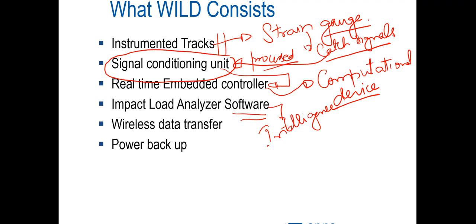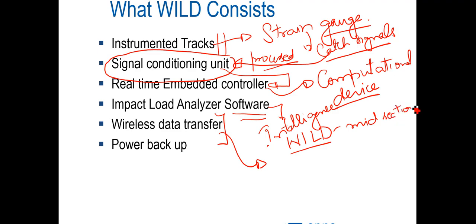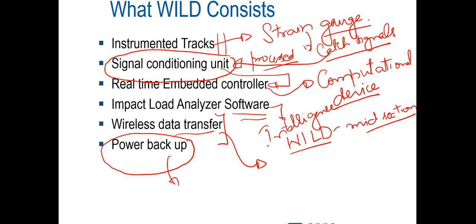Wheel impact detectors are ideally placed where trains run at full speed — in the midsection of a line. Since it's difficult to send someone repeatedly to the midsection to collect data, wireless data transfer is needed. In the midsection, power supply can also be unreliable, so a power backup is important. For example, one WILD installation in Hubli was powered by solar power — the kind of innovation needed to make this technology work smoothly.